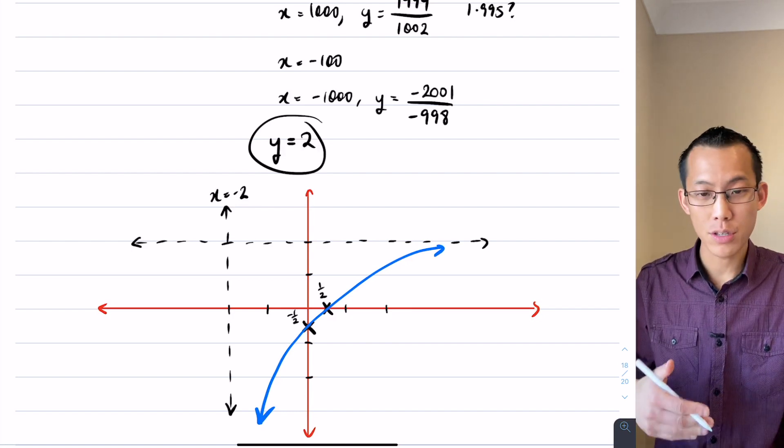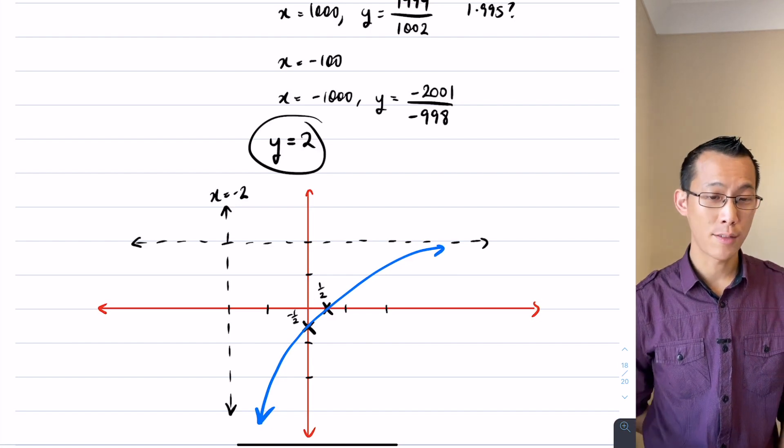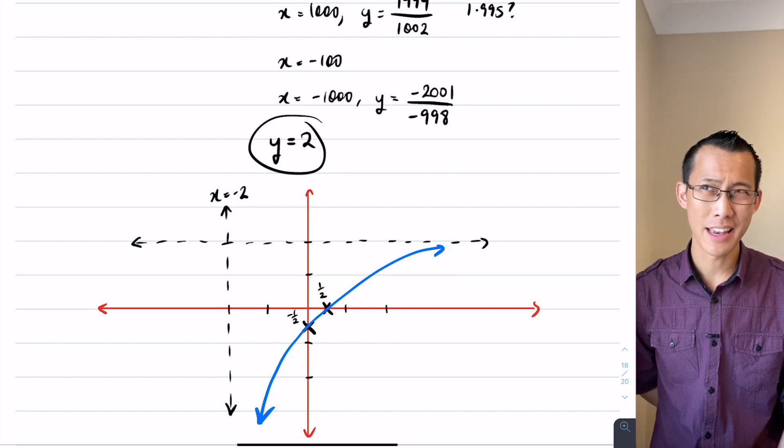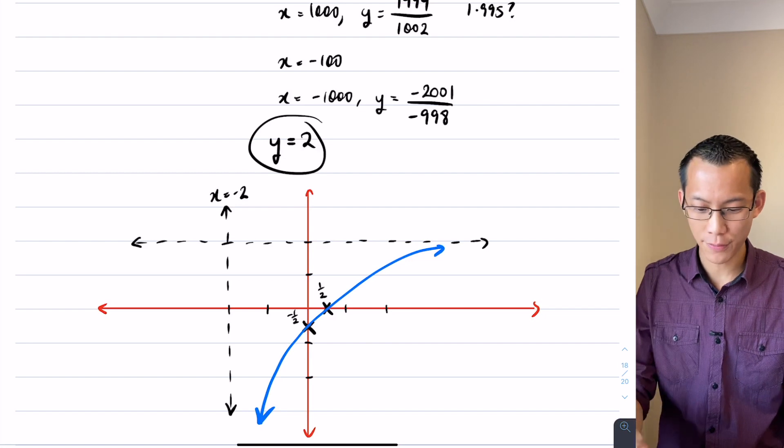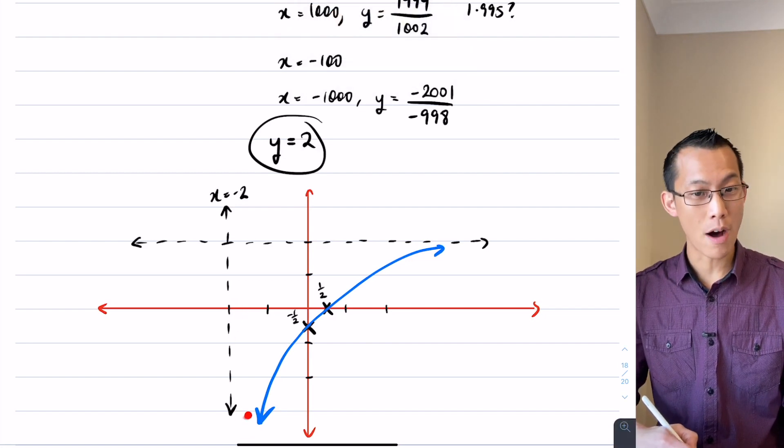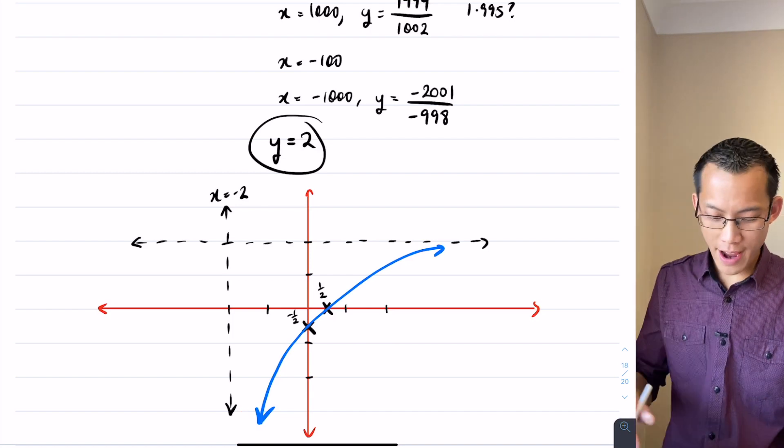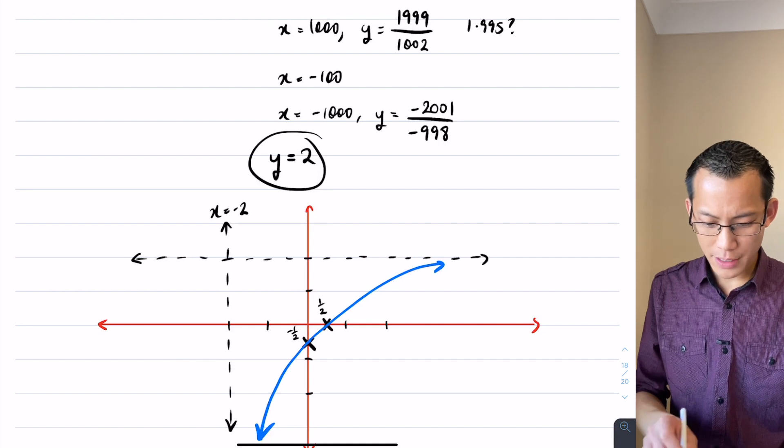You can try this out by putting in values that are close to x equals negative two, like x equals negative 1.9 or x equals negative 1.99. If you put those in, which are sort of x values around here, you're going to get y values that are negative and very large. Okay, and the same way I'm going to think about what happens on the other side. I've got to be somewhere over here.